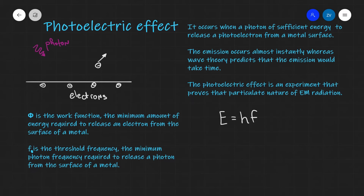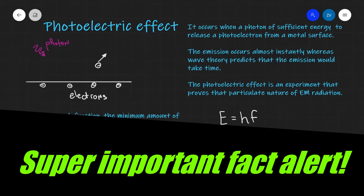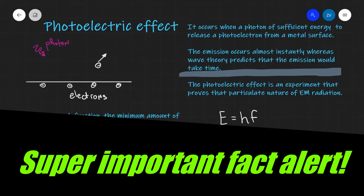Let's talk about the photoelectric effect. The photoelectric effect occurs when a photon of sufficient energy interacts with the surface of a metal and releases a photoelectron from its surface. This is one proof of the particulate nature of EM radiation. Wave theory predicts the photoelectric effect; however, it cannot explain the fact that the emission occurs virtually instantly. This is one of the most important statements — wave theory predicts the emission would take a considerable amount of time, but in reality the emission occurs almost instantly.